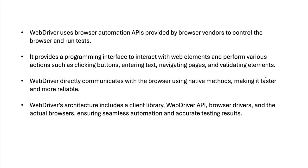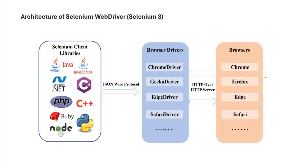WebDriver's architecture includes client libraries, the WebDriver API, browser drivers, and actual browsers, ensuring seamless automation and accurate testing results. So with the help of Selenium WebDriver we can perform the whole of the automation. Here is the architecture of Selenium WebDriver. Currently Selenium 4 is live and in market, but previously we were using Selenium 3. The architecture differs between Selenium 3 and Selenium 4 — so here we will talk about the Selenium 3 architecture first.